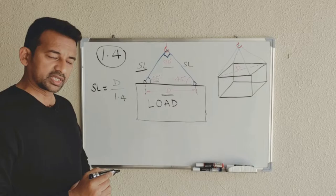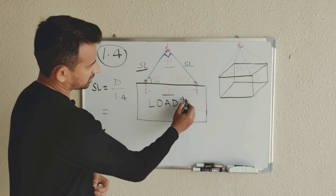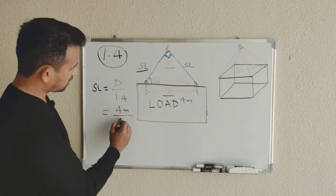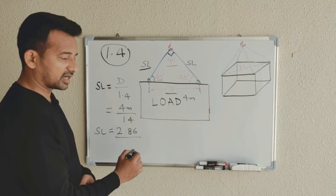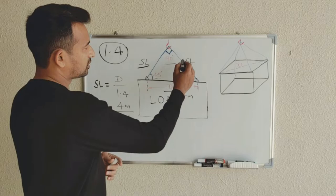So let's take an example. D, let's say 4 meters. So if you have a distance of 4 meters here and you divide it by 1.4, the sling length will be approximately 2.86 meters.